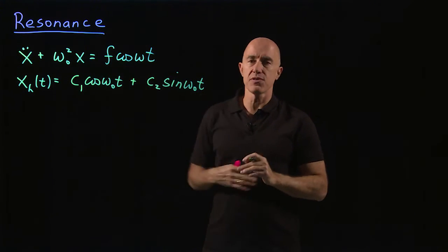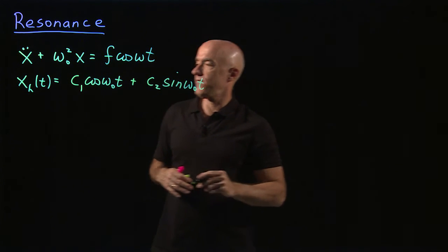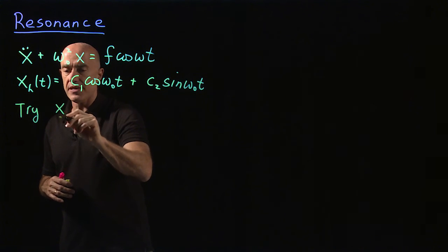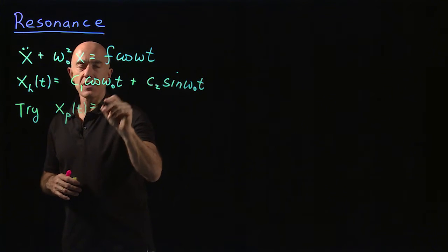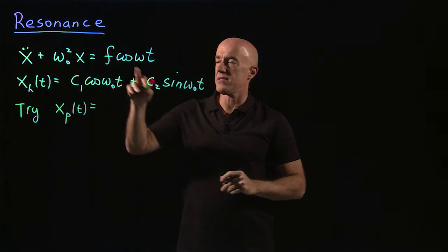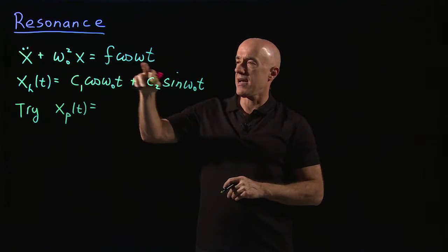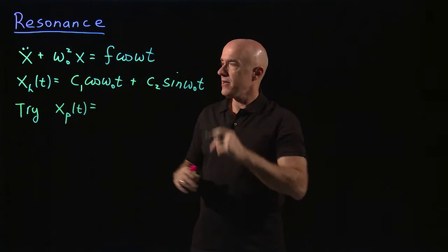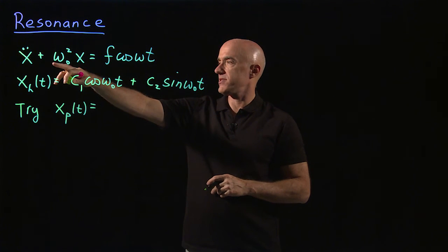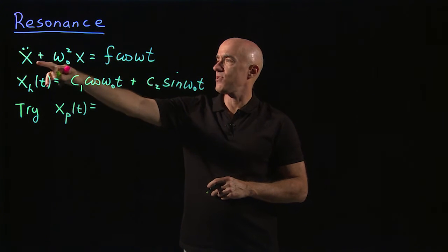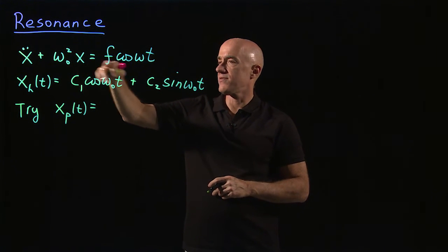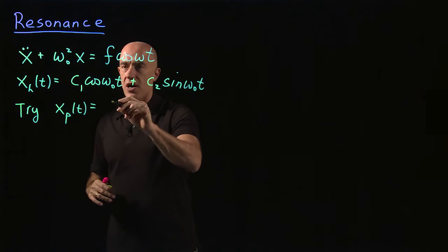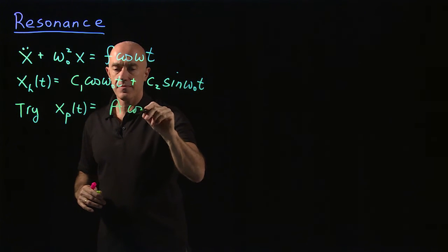To that we're supposed to add the particular solution. To find the particular solution, we use an ansatz. Typically when there's a cosine omega t on the right-hand side, we would try a constant times cosine omega t plus a constant times sine t. In this case it's a little bit easier because there's no first derivative on the left-hand side — so we don't need to introduce a sine. For our ansatz, we can just try a times cosine omega t.